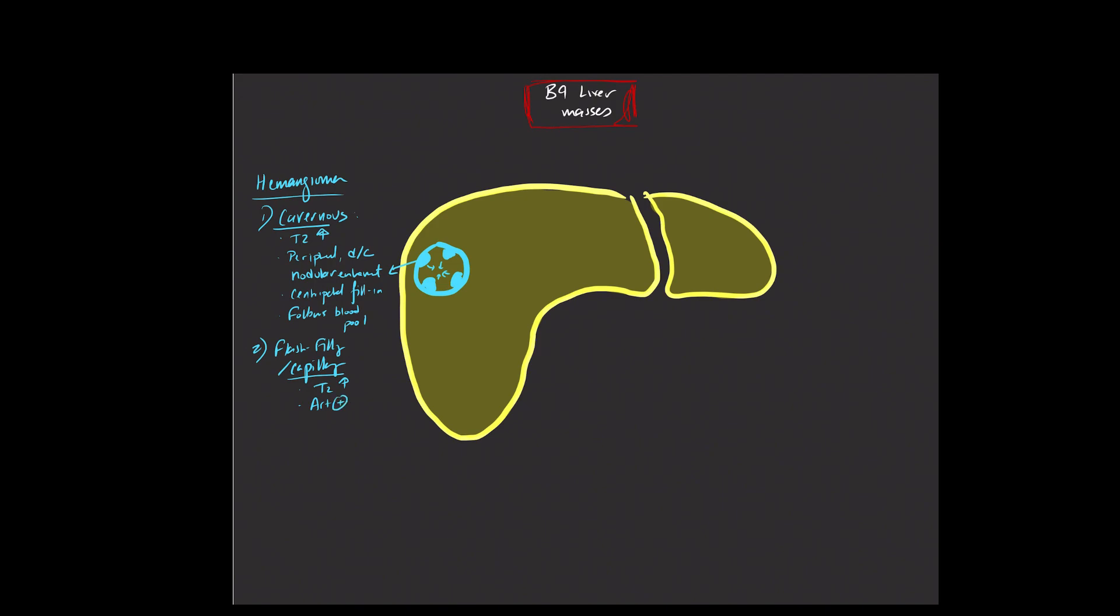On the remaining phases, they'll follow the blood pool, but these will be a more homogeneous enhancement, not that peripheral discontinuous enhancement. These often end up being smaller lesions, typically less than two centimeters in size.